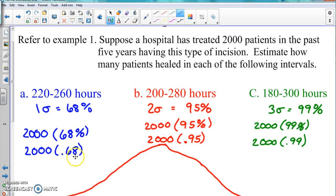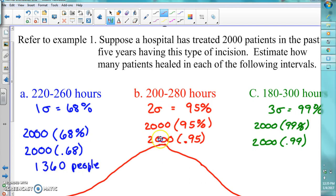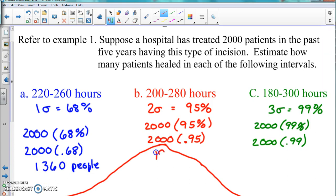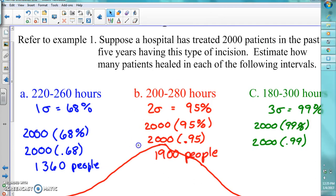We put that into the calculator. This first one gives us 1360, so 1360 people will be healed here. For the second one, that would be 1900 people.